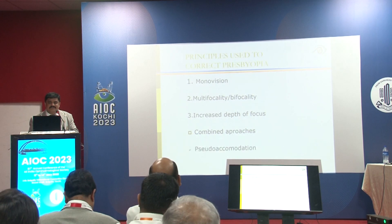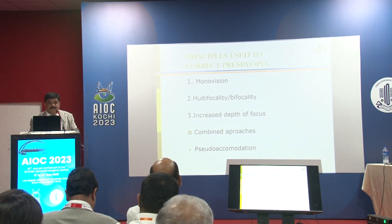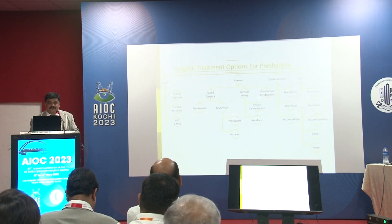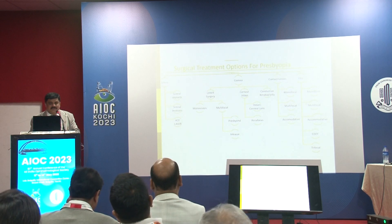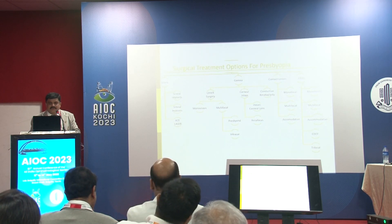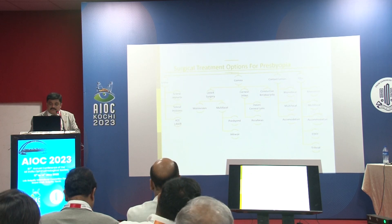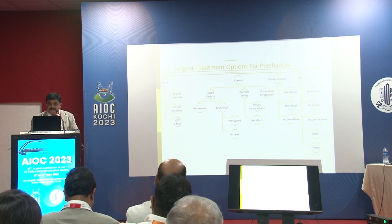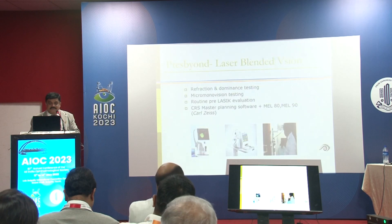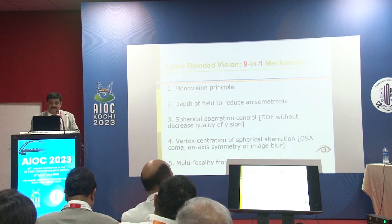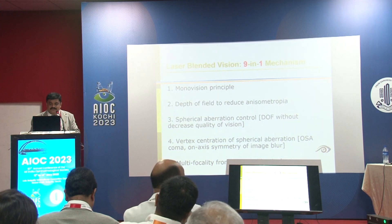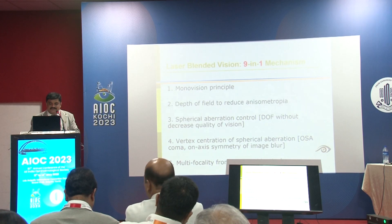The principles to correct presbyopia include monovision, multifocality, presbyopic treatment, increased depth of focus as used in corneal inlays, or combined approaches. Surgical treatments can target the sclera with scleral implants or laser procedures, the cornea with PRESBYOND, intracorneal inlays, or presbyopic contact lens practice. For IOLs, the popular options are diffractive and trifocals. The PRESBYOND principle involves monovision, depth of field, reduced anisometropia, spherical aberration control, vertex centration, multifocality, neural submission, blur adaptation, and neural separation.